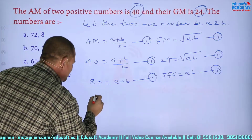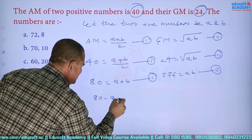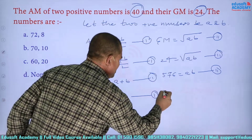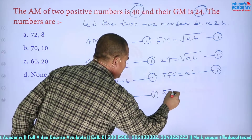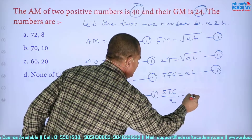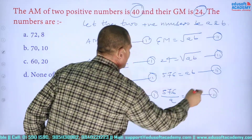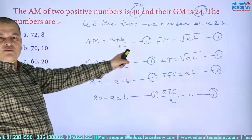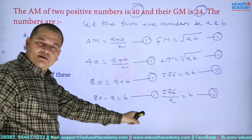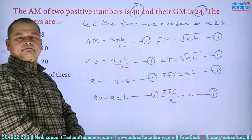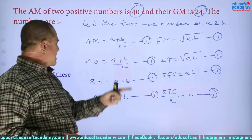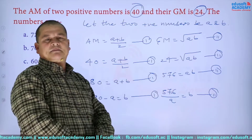From the equations: 80 − a = b, and 576/a = b. We solve these two simultaneous equations to get the values of a and b.